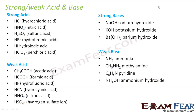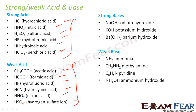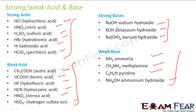Here is a summary slide listing strong and weak acids and bases. Strong acids include hydrochloric acid, nitric acid, sulfuric acid, hydrobromic acid, hydroiodic acid, and perchloric acid. Weak acids include acetic acid, formic acid, hydrocyanic acid, nitrous acid, and the hydrogen sulfate ion. Strong bases include NaOH, KOH, barium hydroxide, and potassium hydroxide. Weak bases include ammonia, methylamine, pyridine, and ammonium hydroxide. Please remember these — knowing whether an acid or base is strong or weak helps you take the correct steps when solving equations.